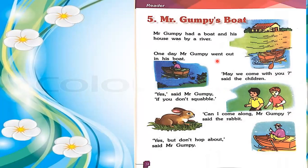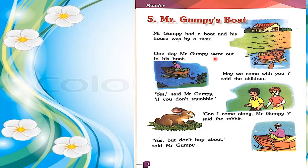Now I will explain this lesson. Take page number 14 again. Mr. Gumpy had a boat and his house was by a river. There is a man — his name is Mr. Gumpy. He has a boat, and his house is near a river. See this picture — by seeing this picture you can understand. This is Mr. Gumpy's boat and this is his house, near the river. One day, Mr. Gumpy went out in his boat.